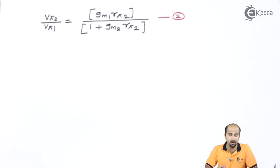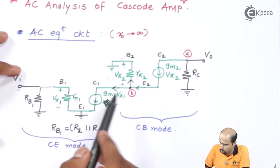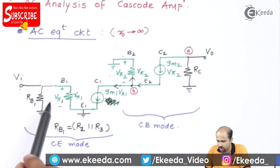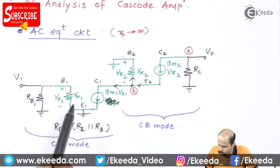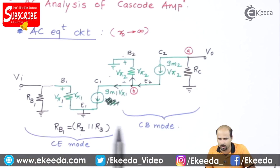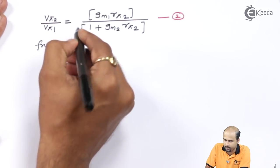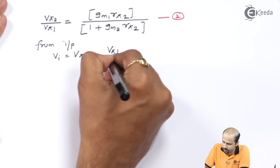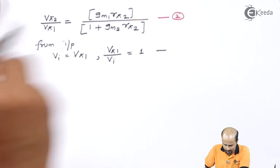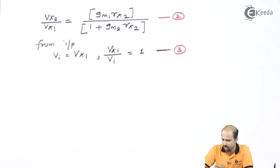We have reached from vo to vπ2 to vπ1. Now we need the value of vπ1 in terms of vi, so we can take the ratio of vo to vi. Looking at the input, vi is nothing but vπ1. So the third equation is: vπ1 divided by vi equals 1.